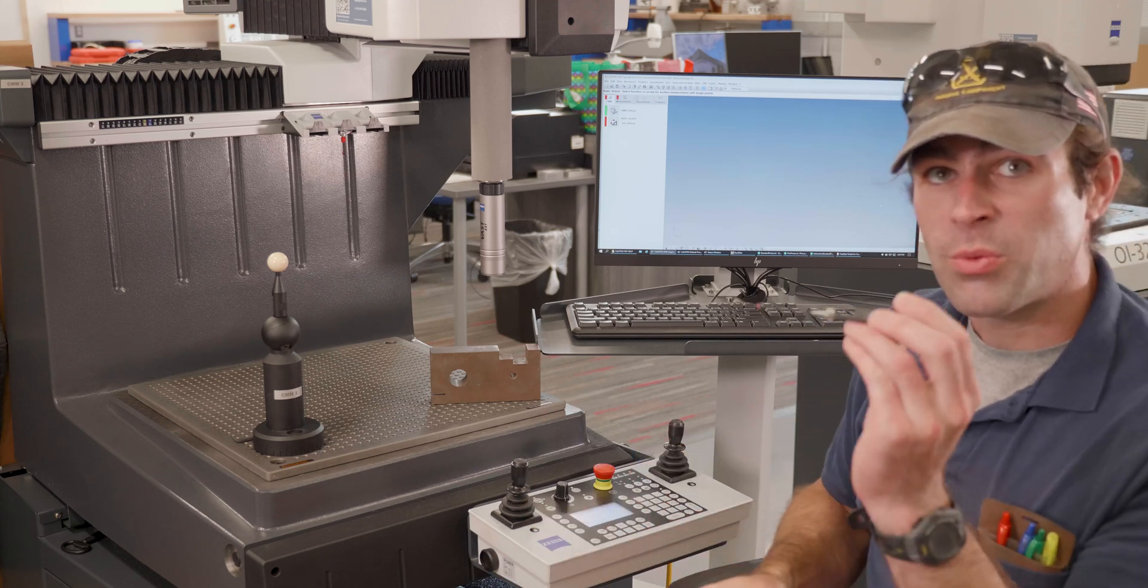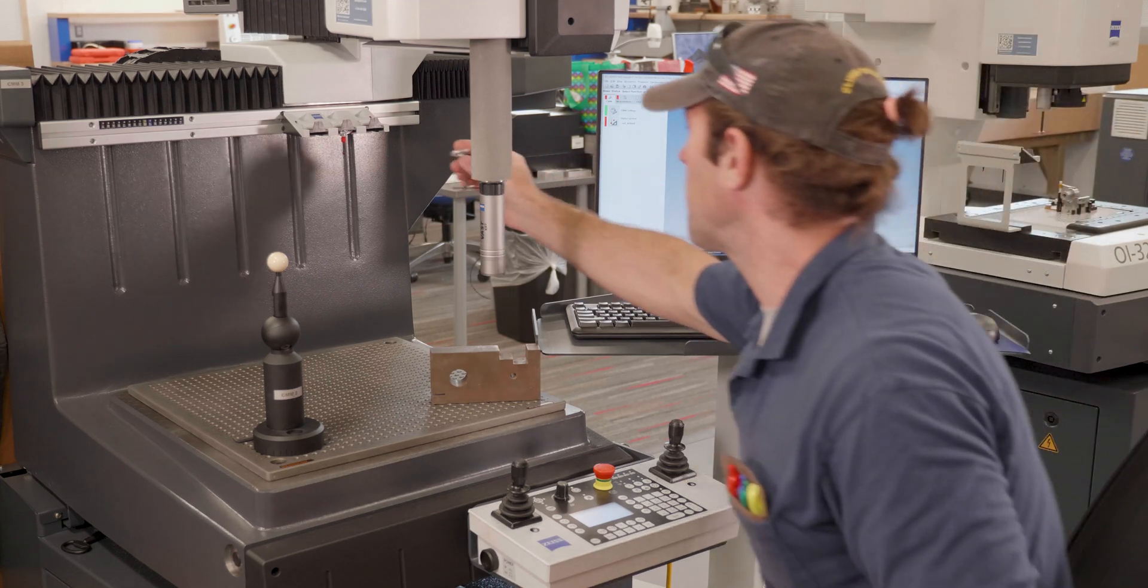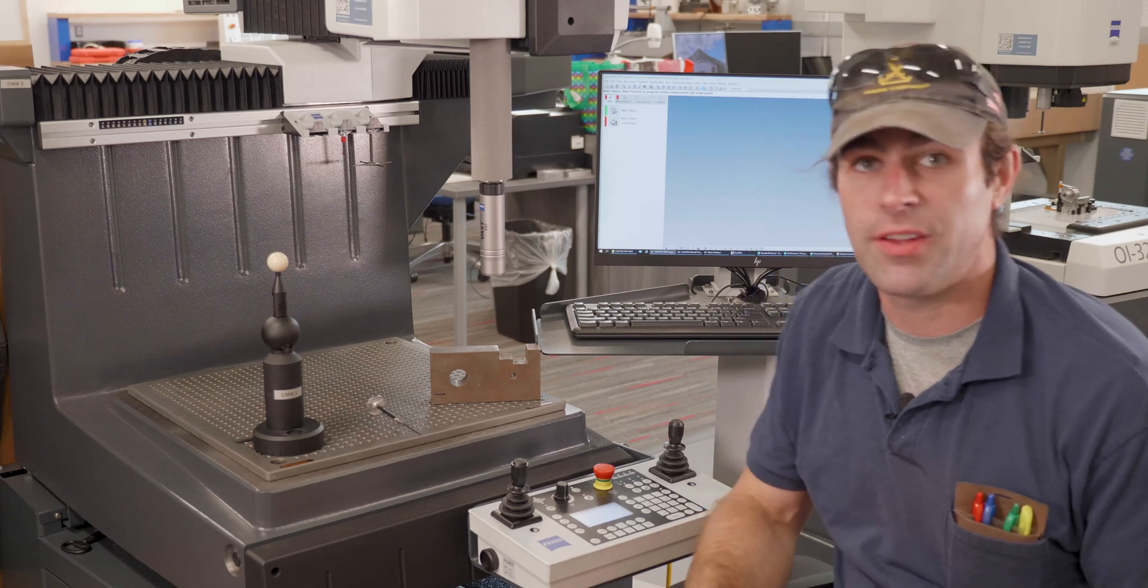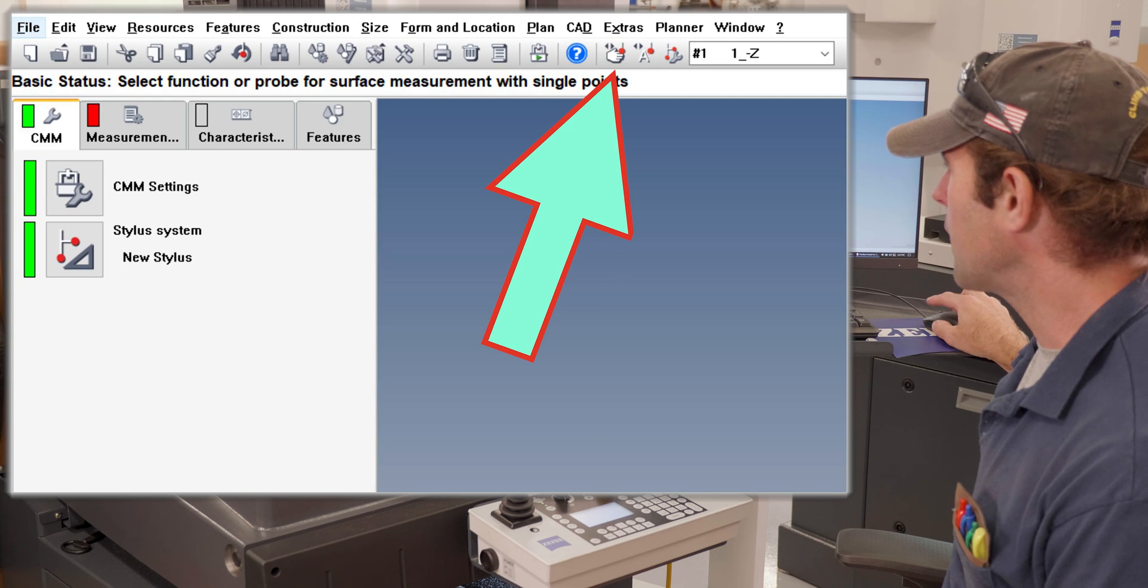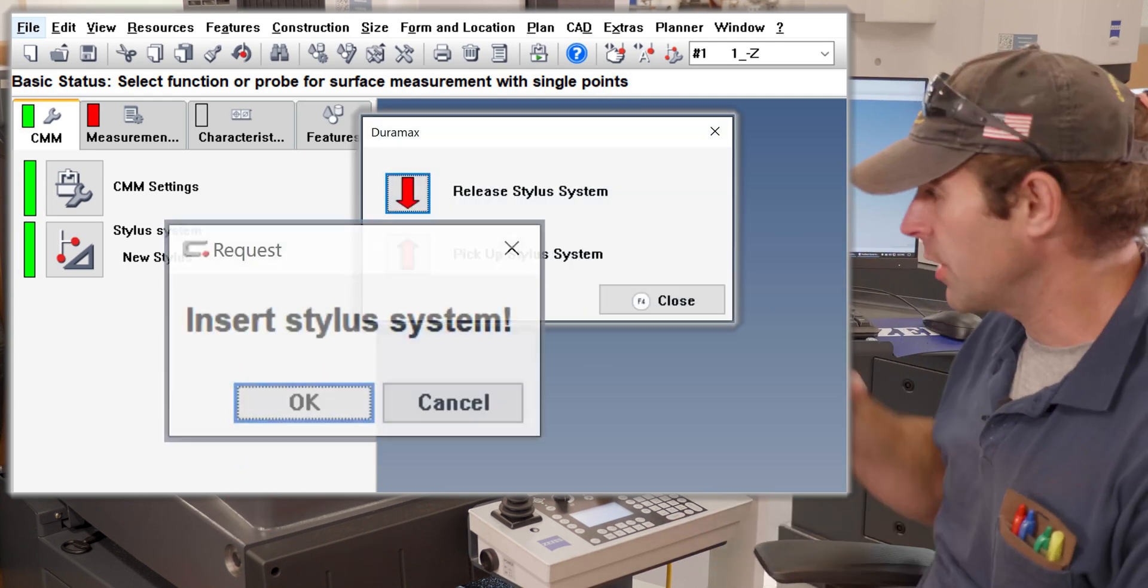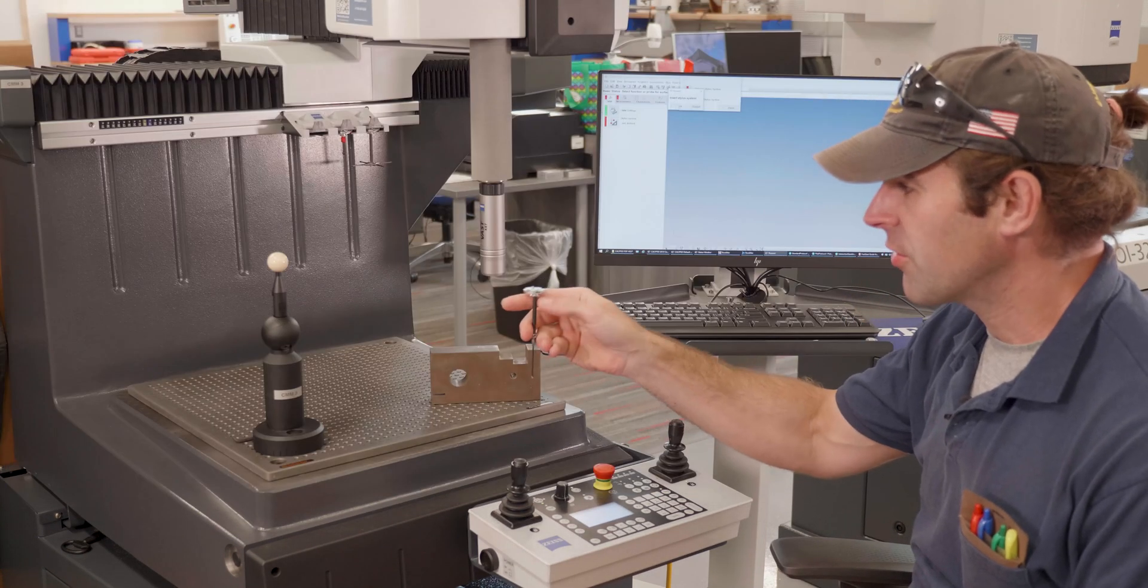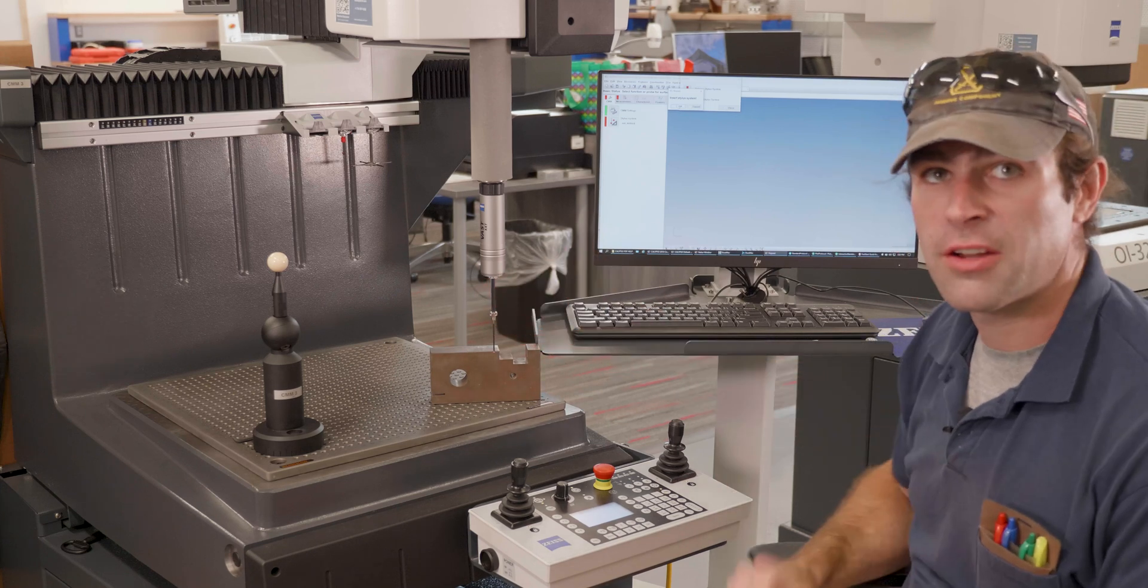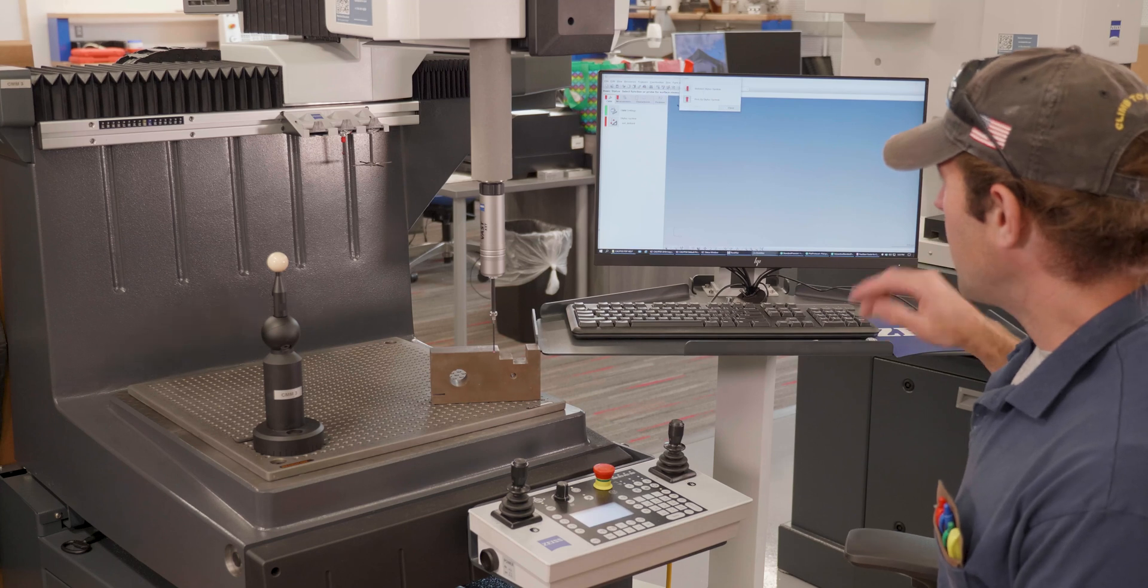Right now we just want to tell the machine what this stylus is. The first thing we'll do is manually pick up the stylus. So I'll go to my screen, go to stylus pick up, pick up stylus system, and it'll ask me to insert the stylus system. I'm going to do just that—remember to line up the three dots on your stylus system with the XXT and it should snap right in. Easy peasy, right? Hit okay.